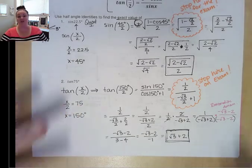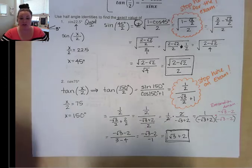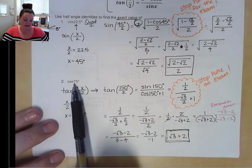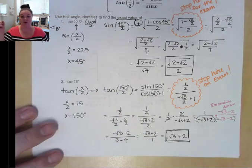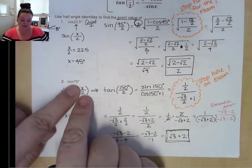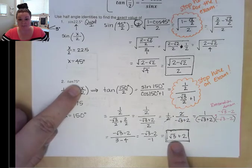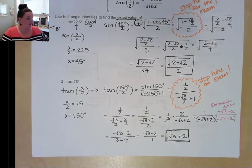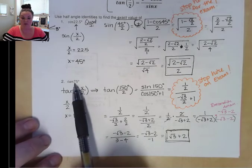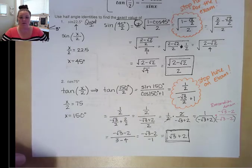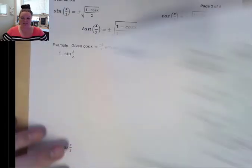I apologize for the extra work in simplifying, but I wanted to show you how to completely simplify because the first 10 or 11 problems in this section give you something like sine, tangent, or cosine of a half angle and have you match the answer. So you have to figure out what your expression simplifies to — if you stop early you won't be able to match the correct answer.